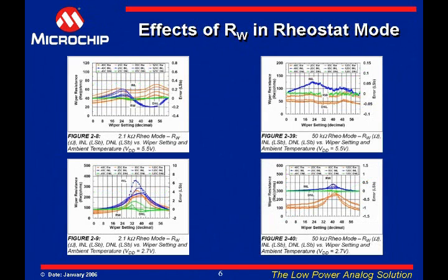The two graphs on the left show the wiper characteristics for the 2.1K ohm device when in rheostat mode. In this mode, the change or variation of the wiper resistance has a greater effect on the INL and DNL of the device compared to potentiometer mode, since the error is added directly into the RAW or RBW resistance.